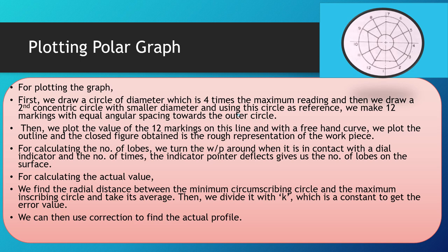To calculate the number of lobes, the workpiece is turned in contact with the dial indicator and the number of times the pointer deflects gives the number of lobes. To find the actual outline, the radial distance between the minimum circumscribing circle and the maximum inscribing circle is found and averaged. This is divided by a constant K, which depends on the type of V-block chosen and the size and shape of the workpiece, giving an error value used to correct the rough outline.